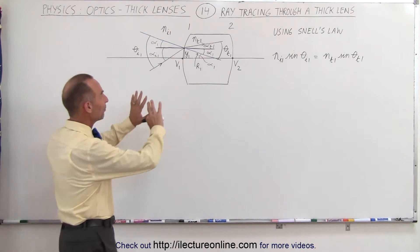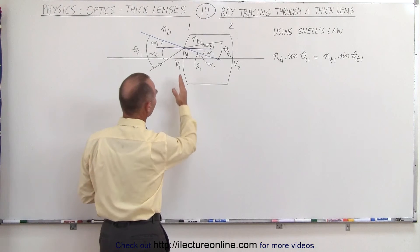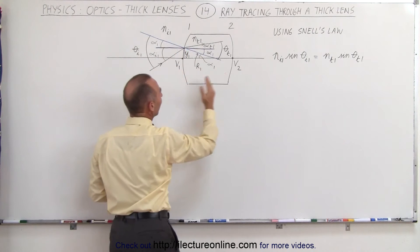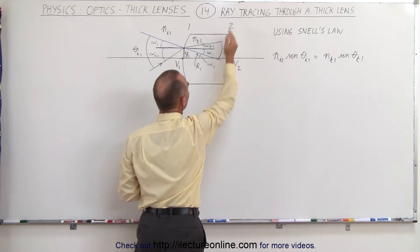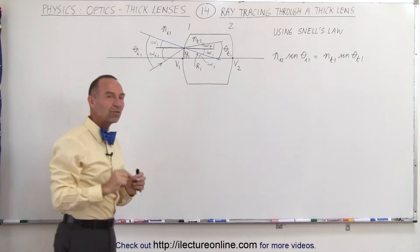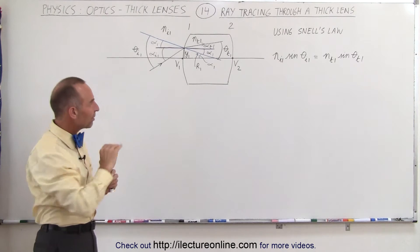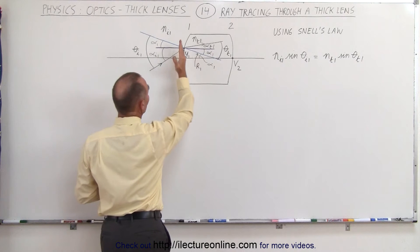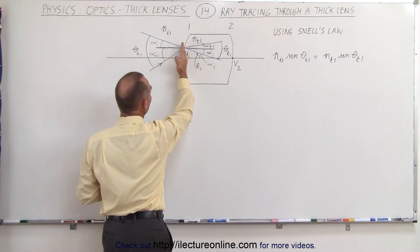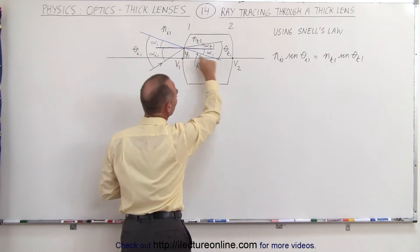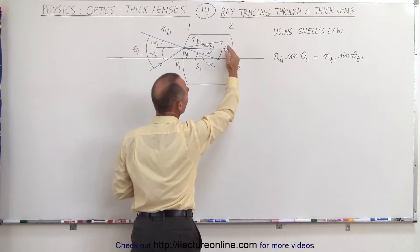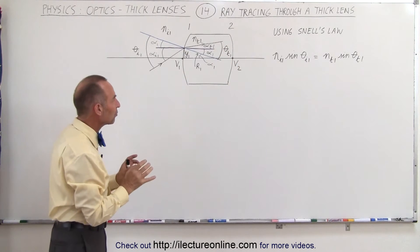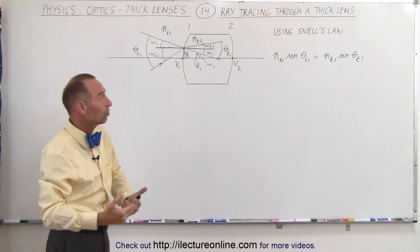Here we have a thick lens. Notice it has a front boundary — we label that boundary number one — and a back boundary, we label that boundary number two. When we trace rays through a thick lens we need to be concerned about transitioning across the front boundary,